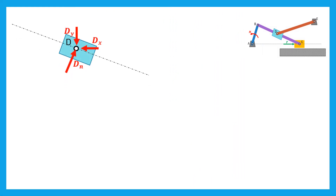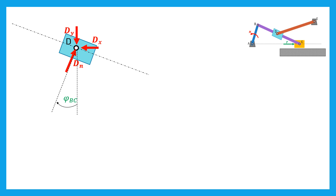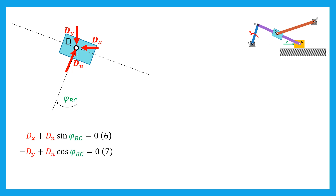Now let's focus on the slider in D. Recall that the angle of force DN with the vertical direction is phi_BC. Thus the horizontal equilibrium writes: minus DX plus DN·sin(phi_BC) equals zero. And the vertical equilibrium writes: minus DY plus DN·cos(phi_BC) equals zero.